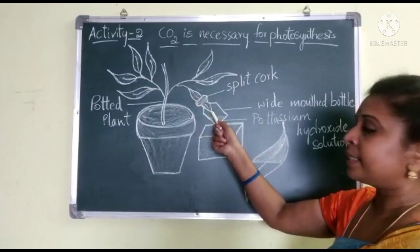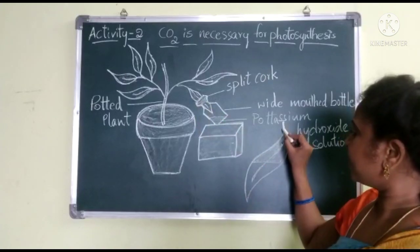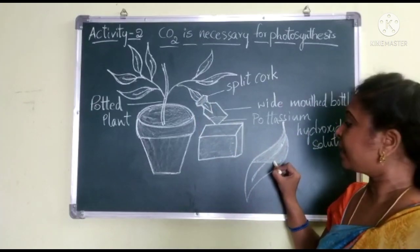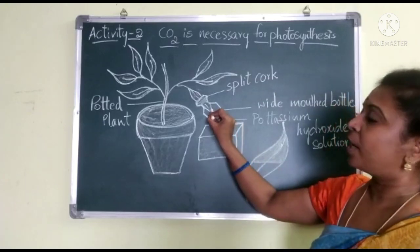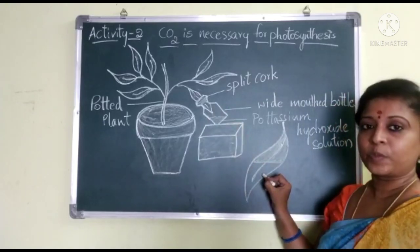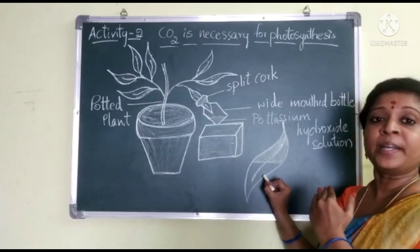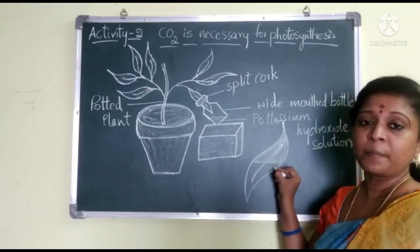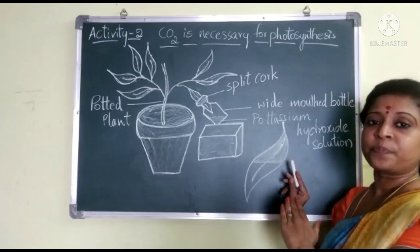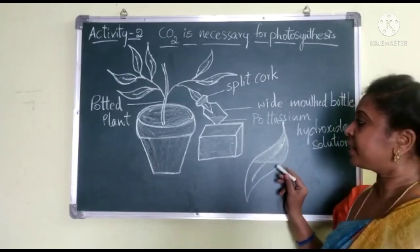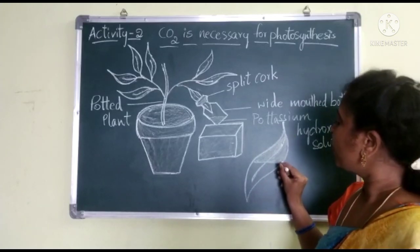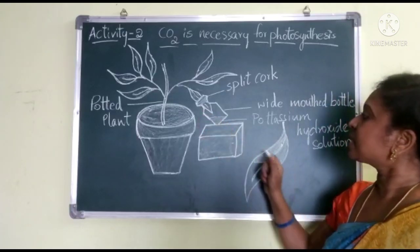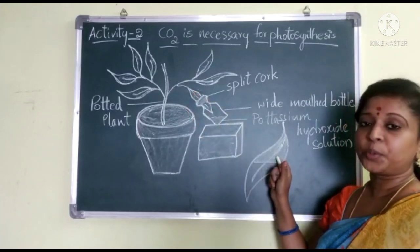Take the leaf which was inserted in the bottle and test it with iodine solution. We boil this leaf in methylated spirit to perform the starch test — by boiling in methylated spirit, the chlorophyll content is removed and the leaf turns pale. Now when iodine solution is applied, the portion that was inside the bottle will remain pale in color, while the portion outside the bottle will turn blue-black.